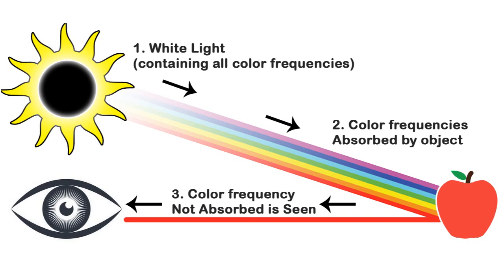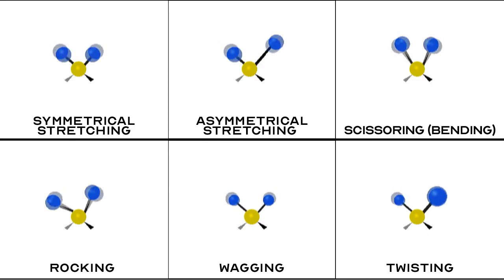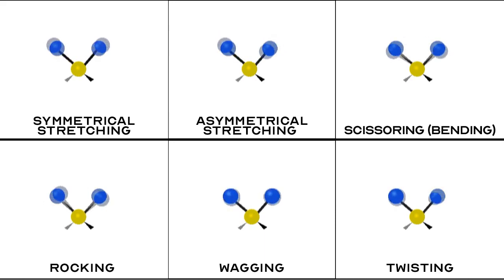One very important thing to know about all matter is that at the atomic and molecular level, all matter is moving. At the atomic level, there are electrons moving around the nucleus of the atom. And at the molecular level, there are molecular vibrations between the atomic bonds within the molecule.